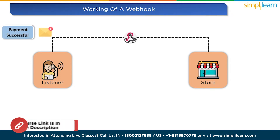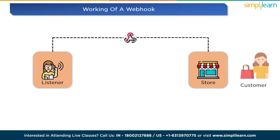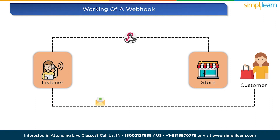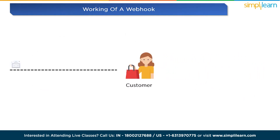Your online store's webhook gets this message and knows the payment was successful. The webhook then sends a message to the customer — like an email — saying 'thanks for buying the t-shirt, your payment was successful.' The customer checks their email and sees the message telling them their payment went through and the order is confirmed.